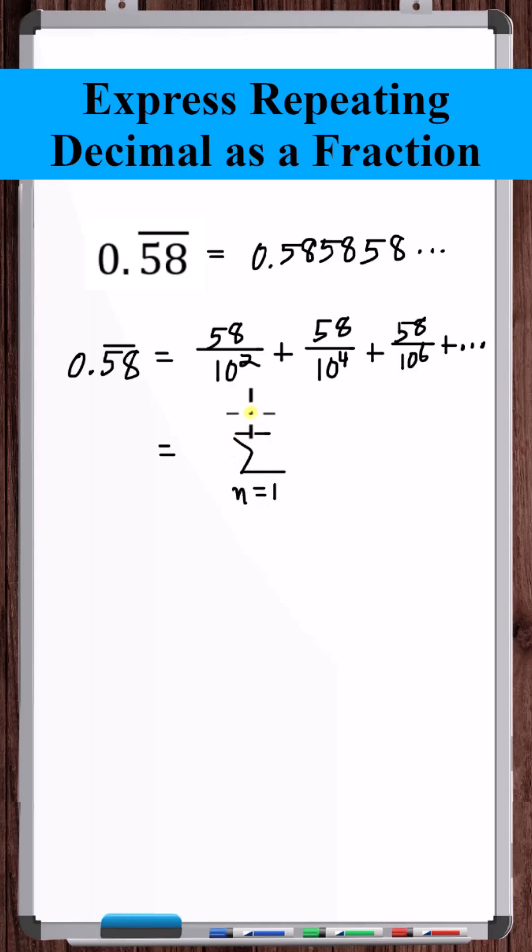the sum from n equals 1 to infinity of 58 over 100 is the first term. The common ratio is 1 over 100 to the n minus 1 power.